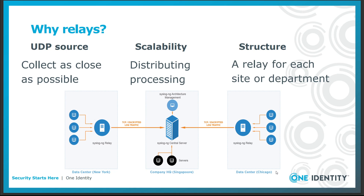Relays have many important roles in a logging infrastructure. Many devices use UDP for log transport, and UDP is an unreliable protocol, so you want to collect these log messages as close to the source as possible. Later we will learn about message parsing which can be resource hungry. Using relays you can distribute processing so not everything has to be done at the central server. Using relays can give structure and additional security to your logging infrastructure. You can install a relay for each department or site, which is especially important when the central server is at a remote location. Relays ensure that log messages leave clients immediately even if the central server is unavailable due to maintenance or network problems.